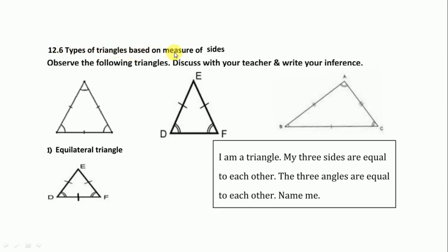Type of triangle based on measure of sides. In this triangle all sides are equal, so we say it is an equilateral triangle. In the next figure only two sides are equal, so we say it is an isosceles triangle. In this figure all sides are different or not the same, so this type of triangle we call a scalene triangle.